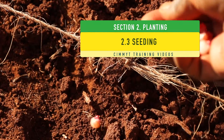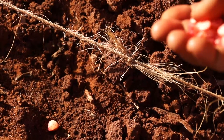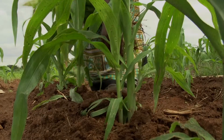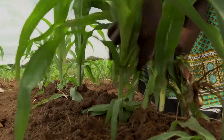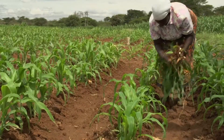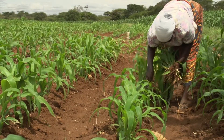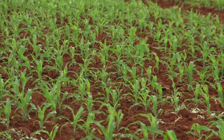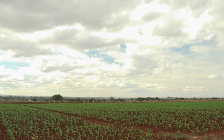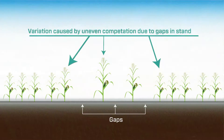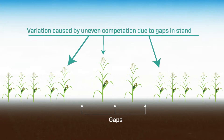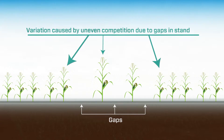Wherever possible, it is recommended that two seeds are planted per planting station and later thinned to one plant per planting station post germination. This is to ensure a good stand in the low nitrogen stress screening block. Good stands are critical in low nitrogen stress blocks more than in optimal trials, as gaps in the stand will result in uneven competition within and among rows.